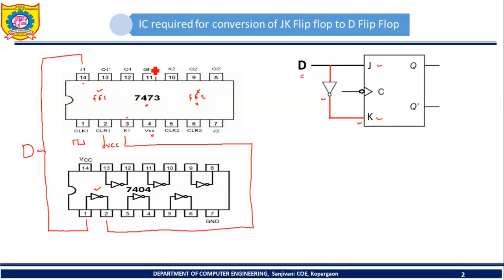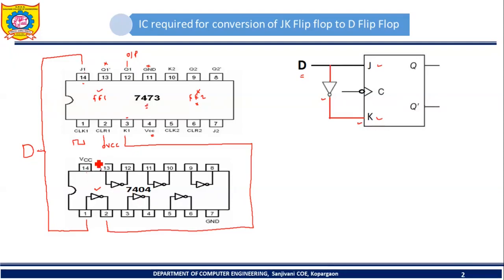Pin number 11 should be connected to ground. Pin number 12 is Q, the output of flip-flop 1, so it should be connected to the output. Pin number 13 is Q', the inverted output, which I don't want to use here. Connections for 7473 are now complete. For 7404, pin number 14 should be connected to VCC and pin number 7 should be connected to ground. My circuit is now ready and this circuit is going to act as a D flip-flop.